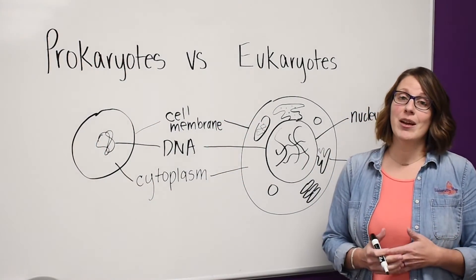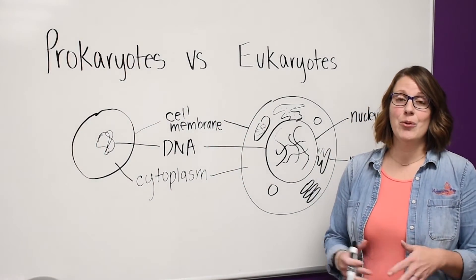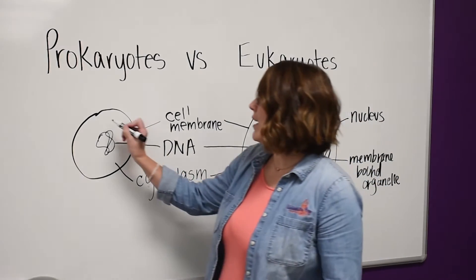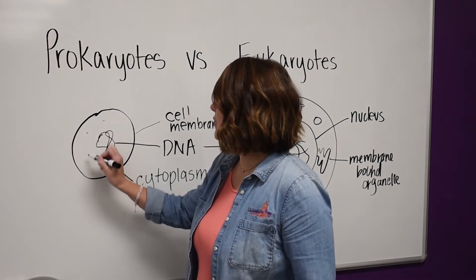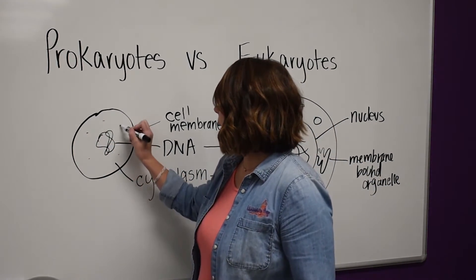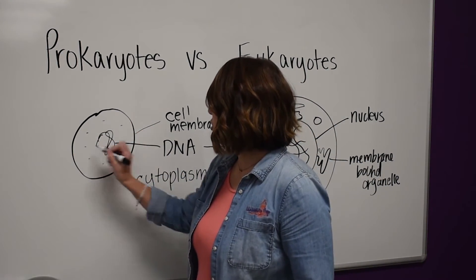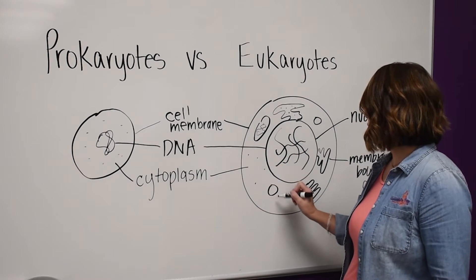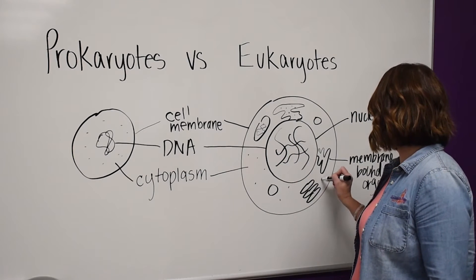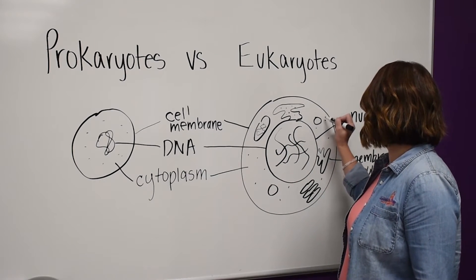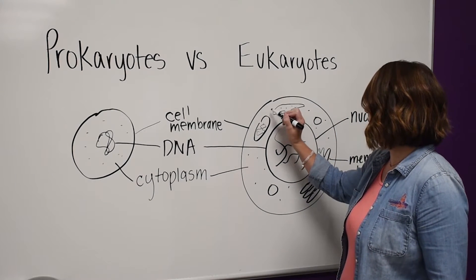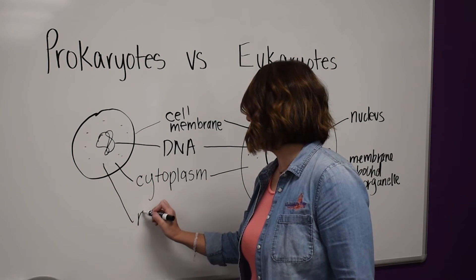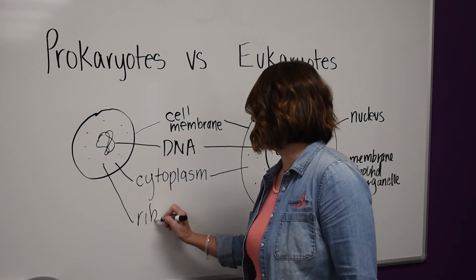One last structure that both cell types share is ribosomes. These are tiny structures within the cell that produce, or synthesize, proteins. Both prokaryotes and eukaryotes have ribosomes.